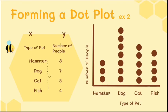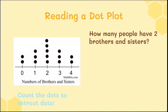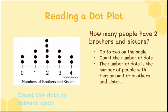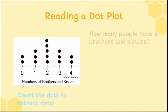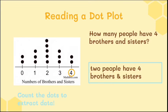Now let's read a dot plot showing number of brothers and sisters. If I ask how many people have 2 brothers and sisters, you go to 2 on the number line and count the dots: 1, 2, 3, 4, 5 — so 5 people have 2 brothers and sisters. Let's try one more: how many people have 4 brothers and sisters? Go to 4 on the number line and count the dots — there are 2 people that have 4 brothers and sisters.